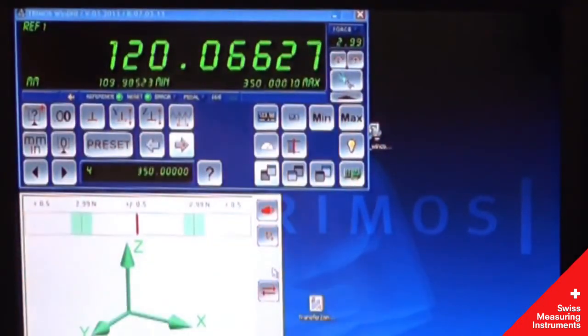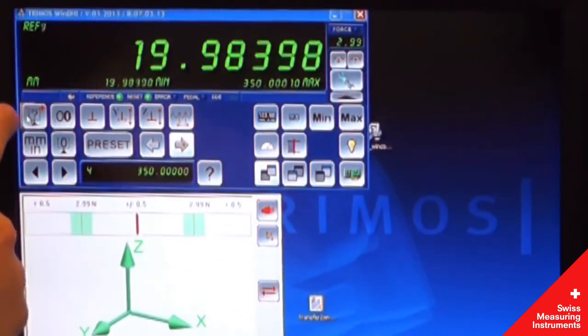Up here in the top left corner is the main WinDHI interface. This has your basic controls, minimum-maximum buttons, presets, units, and references.